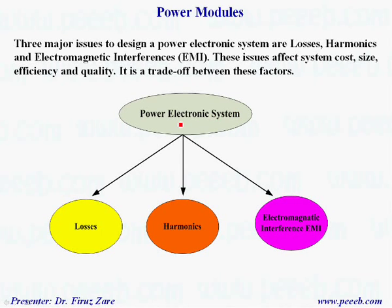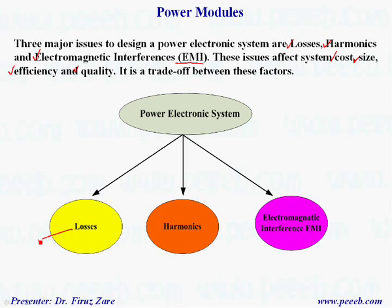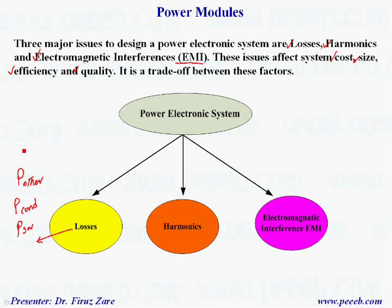Three major issues in designing a power electronic system are losses, harmonics, and electromagnetic interference (EMI). These issues affect system cost, size, efficiency, and quality, so it's a trade-off between these factors. Losses include switching losses, conduction losses, and also losses associated with the controller and energy stored in stray components.